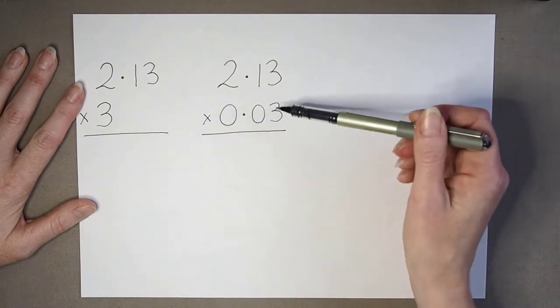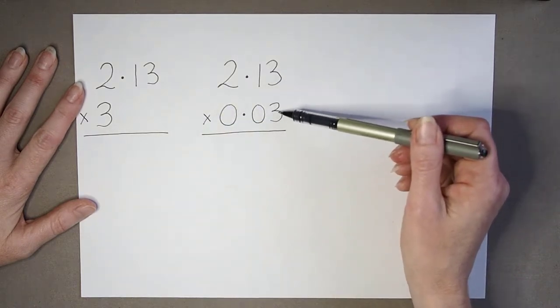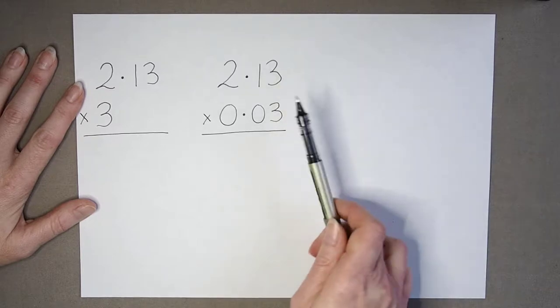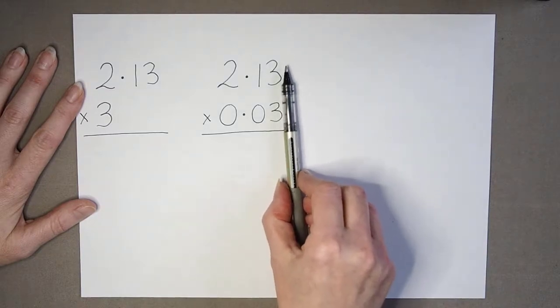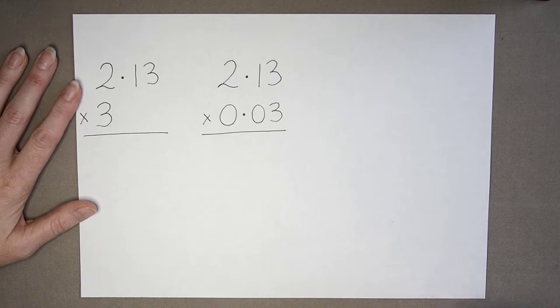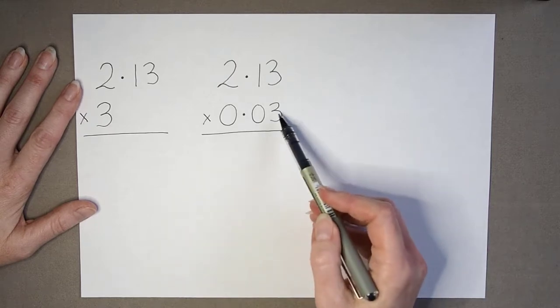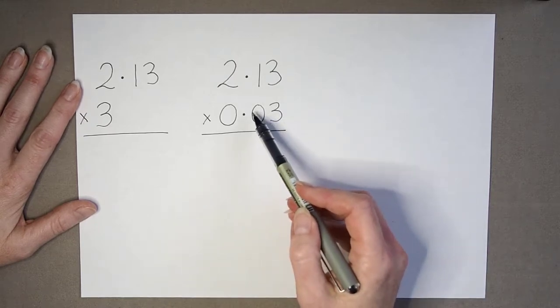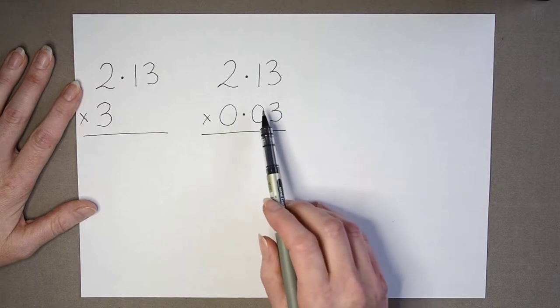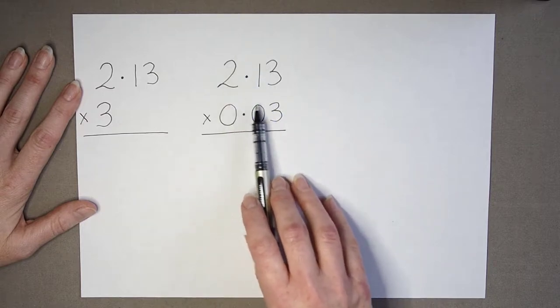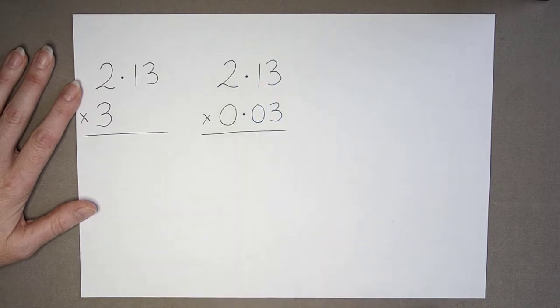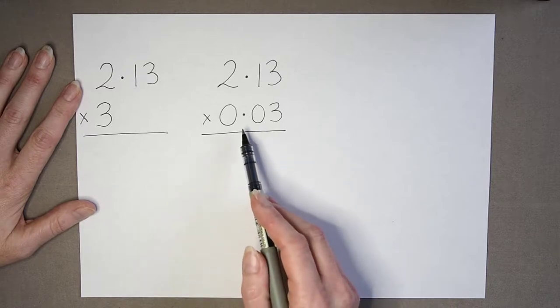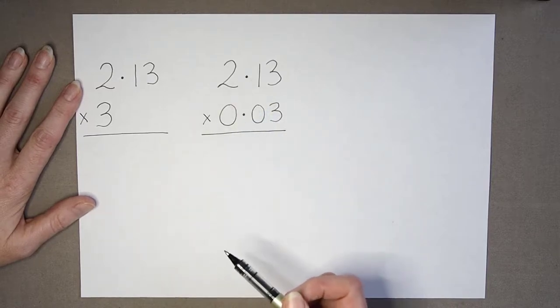A more common mistake is to put the 3 on the right side so it lines up, because that's the way the column method looks, and then fill in the gaps because they think it has to line up as if lining up decimals where decimal points are under each other.